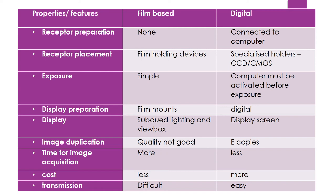A more detailed comparison: for receptor preparation, films need nothing while digital setups require switching on the computer, opening software, and keeping it ready. For receptor placement, film holding devices are used, and for digital sensors specialized holders exist; PSP can still use the same film holding device since it is similar in size to film. For exposure, in both cases the film or sensor is placed inside the oral cavity and the x-ray machine is set; in a digital setting, the computer must be activated before exposure or no image will be captured.